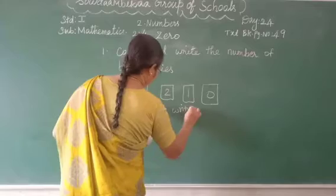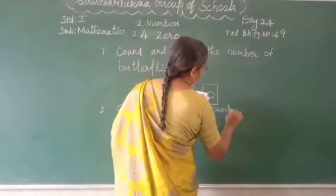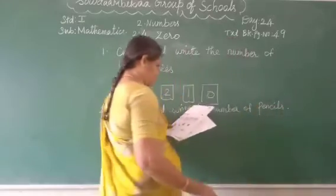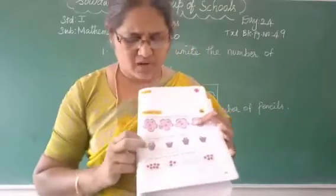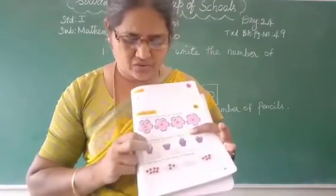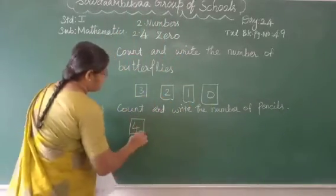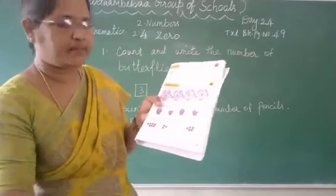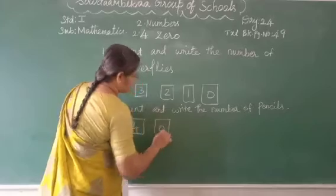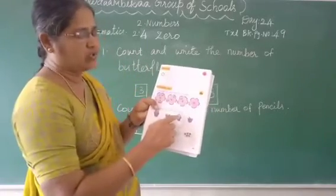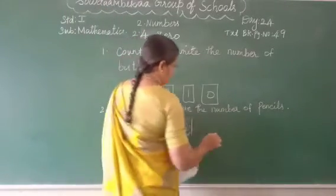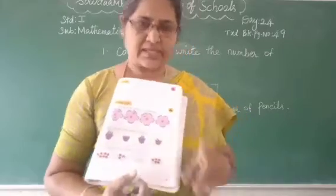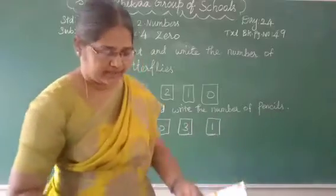Count and write the number of pencils. In the first box, how many pencils? 1, 2, 3, 4. Four pencils. Second box — no pencils. So write the number 0. Third one — how many pencils? 1, 2, 3. In the fourth box — only 1. Write the number 1. Okay. Next.